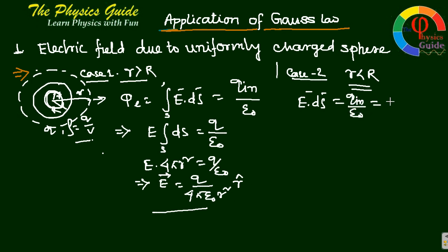Here Q_in is not Q because Q_in is in the enclosed volume, that is 4/3 π r³ times ρ. ρ is the volume charge density, that is charge per volume, by ε₀.